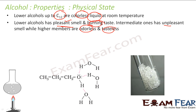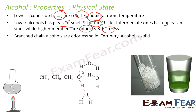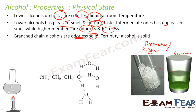The intermediate alcohols don't have a good smell — they have a bad smell. The higher ones don't have any smell and they don't have any taste. If you go higher, alcohols become solid. The branched alcohols also don't have any smell and they are solid. For example, tertiary butyl alcohol is a solid.